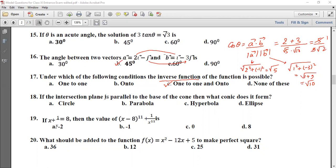Problem 18: If the intersection plane is parallel to the base of the cone, then what conic does it form? So if the intersection plane is parallel to the base of the cone, we have a circle.